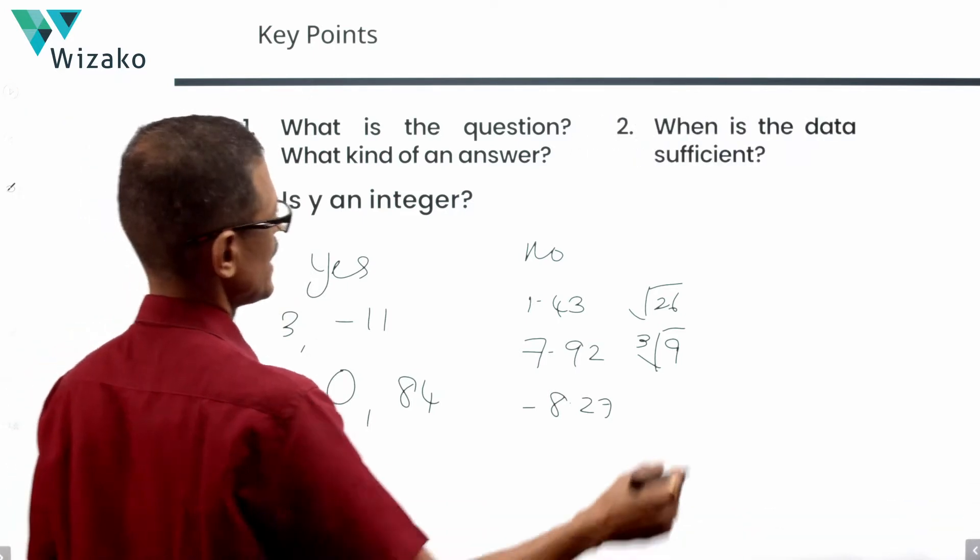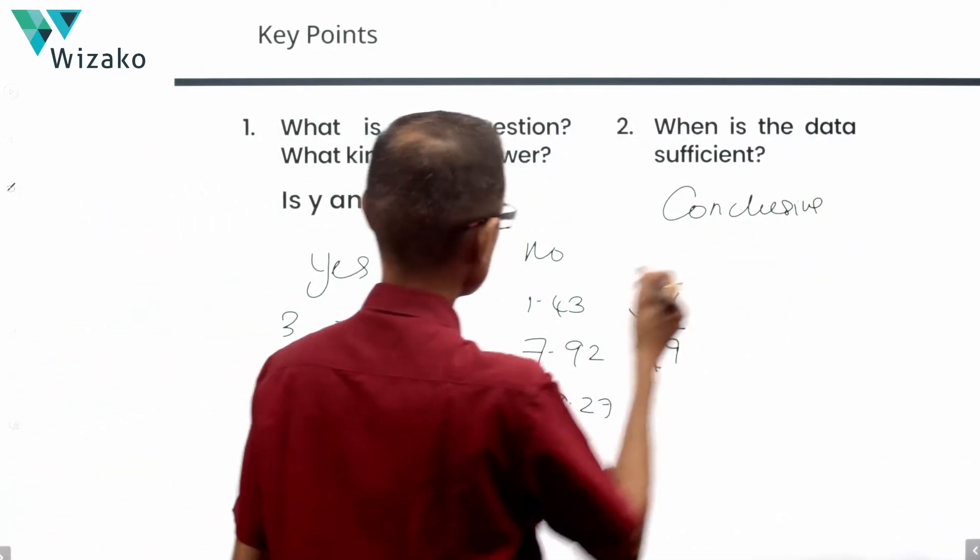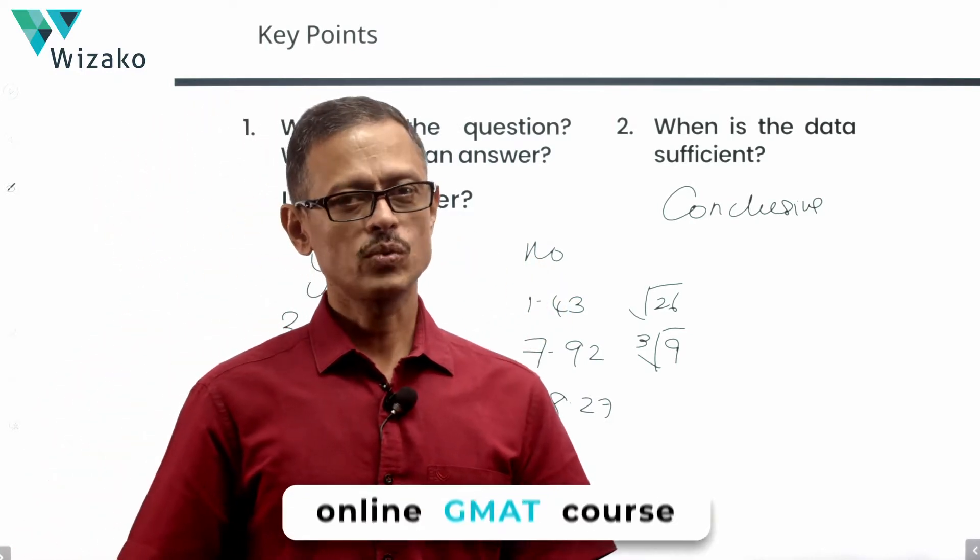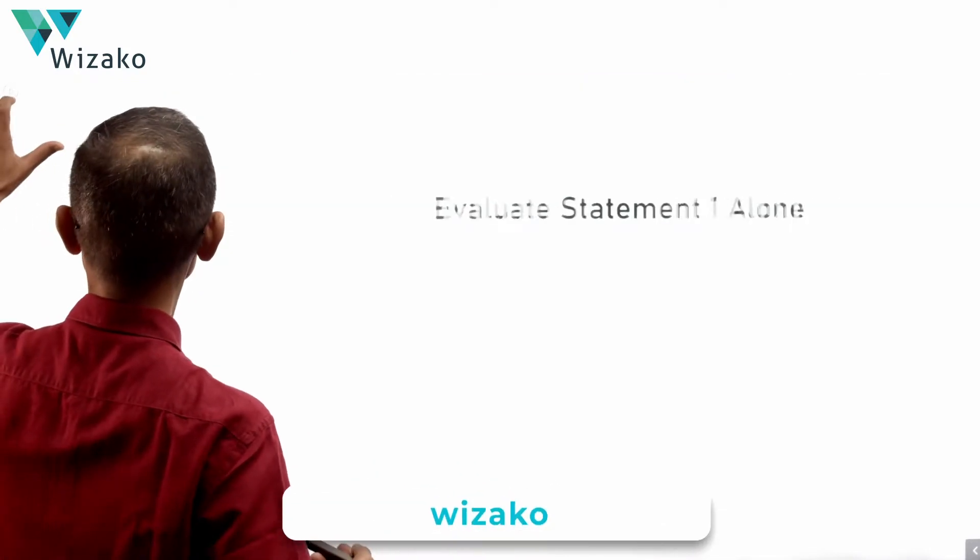The data is sufficient when we have a conclusive yes or a conclusive no. If the answer to the question is yes or no, conclusivity, definitiveness of the answer is what we are looking at. Start with statement 1 and see whether that will give us a conclusive answer.